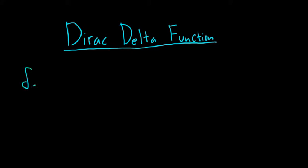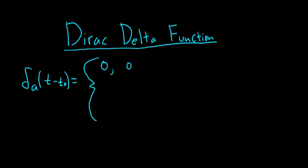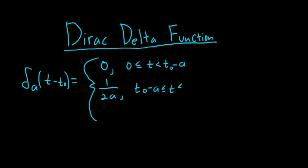So delta sub a of t minus t₀ — we're going to define this specific piecewise function. It's 0 if t is between 0 and t₀ minus a. It's 1 over 2a if t is between t₀ minus a and t₀ plus a. And then 0 again for t greater than or equal to t₀ plus a.